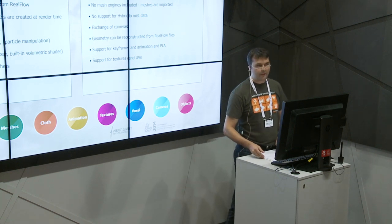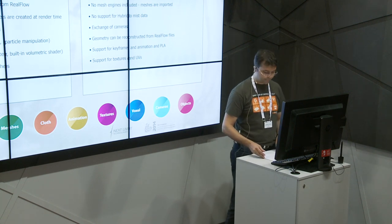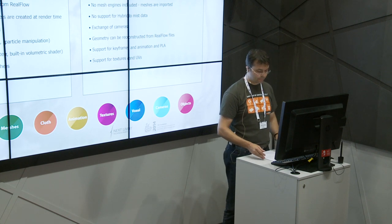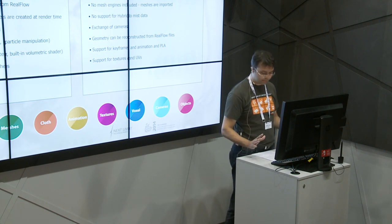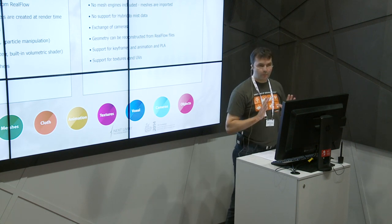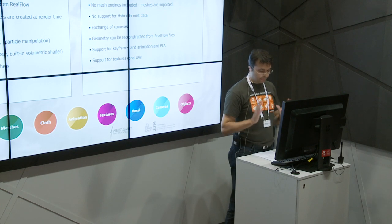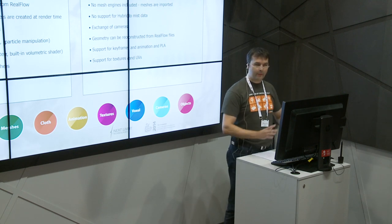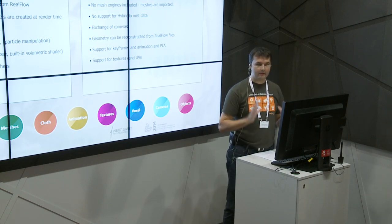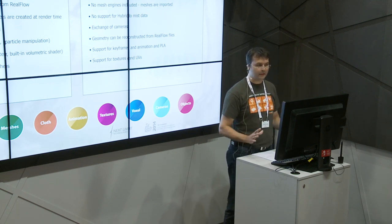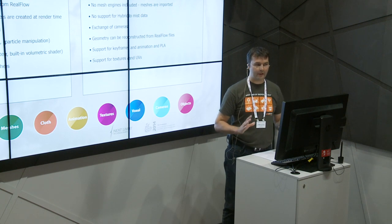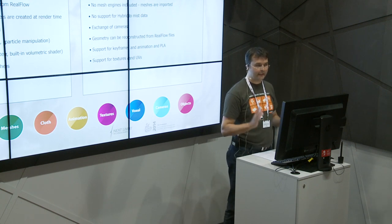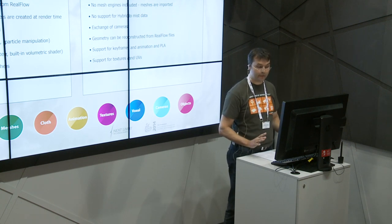We have support for mist in the render kit but not in the connectivity plugins. Geometry created and modified inside RealFlow can be reconstructed from the SD data file. We also have support for keyframe animation and PLA (point level animation) data, and there is support for textures and UVs. These are the main differences, and now we can start with a basic project where you'll learn how to work with the render kit and the plugins together in one scene.